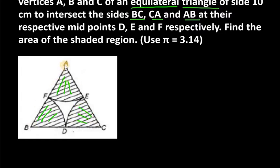Now you can see the bigger area is of triangle ABC. So you have to find triangle ABC and subtract these three sectors out of it, or what you can do is you can take area of three sectors only.